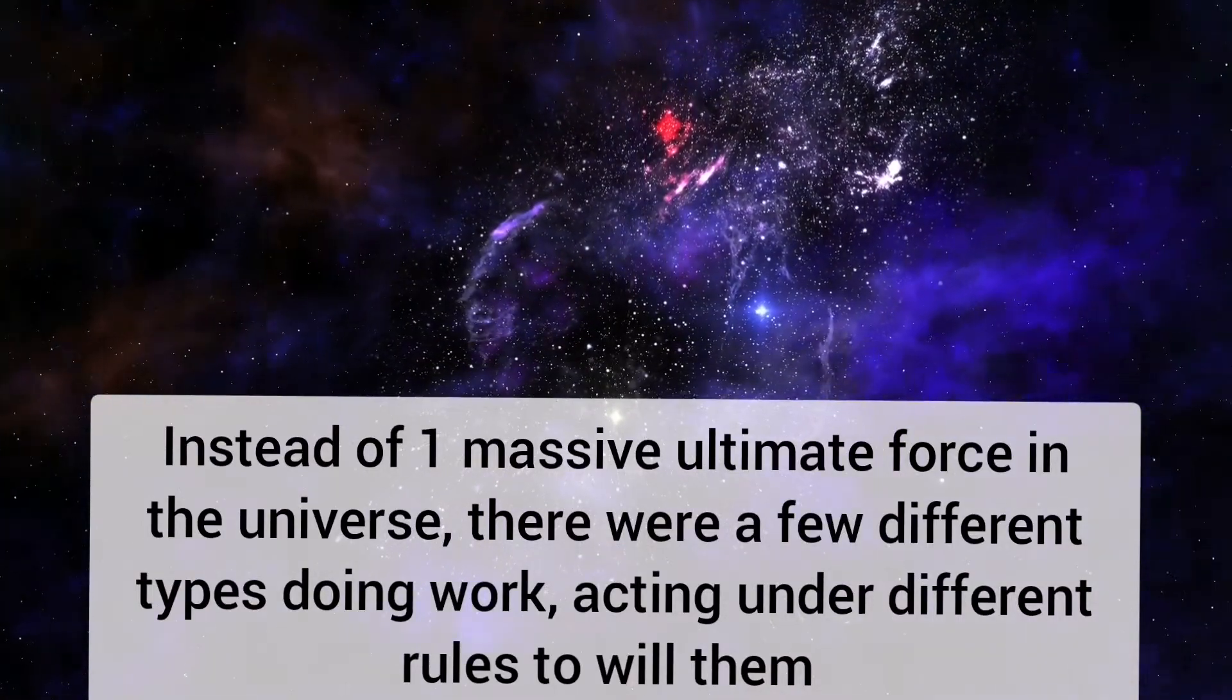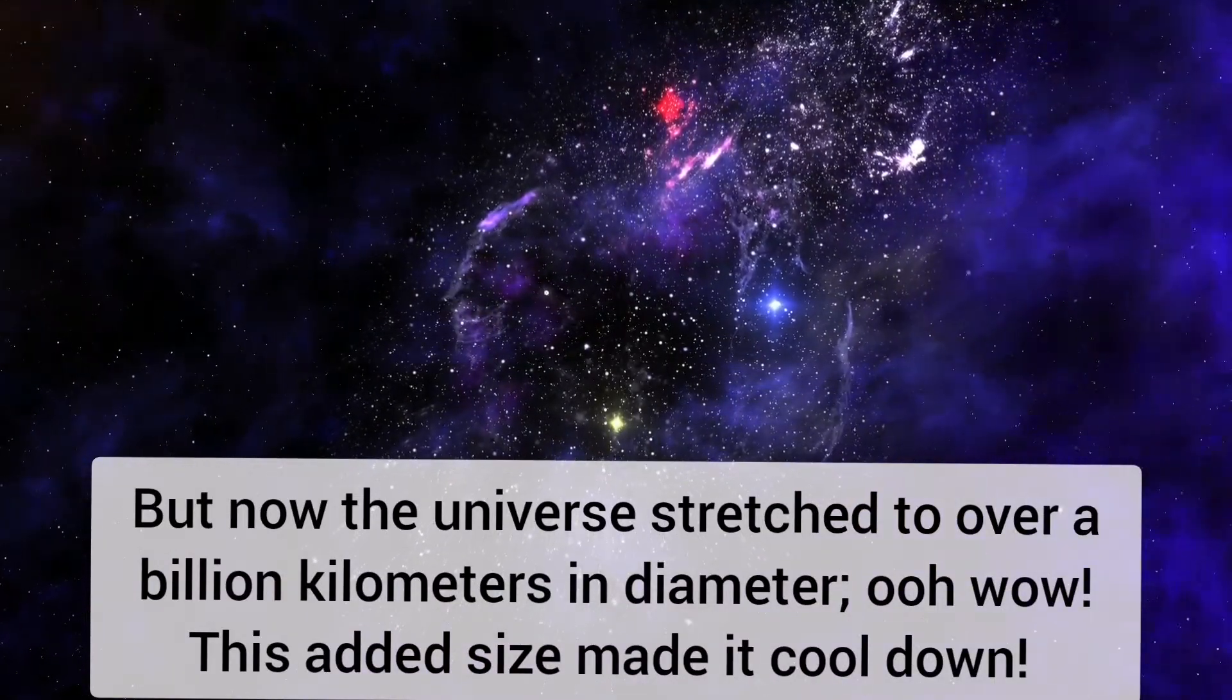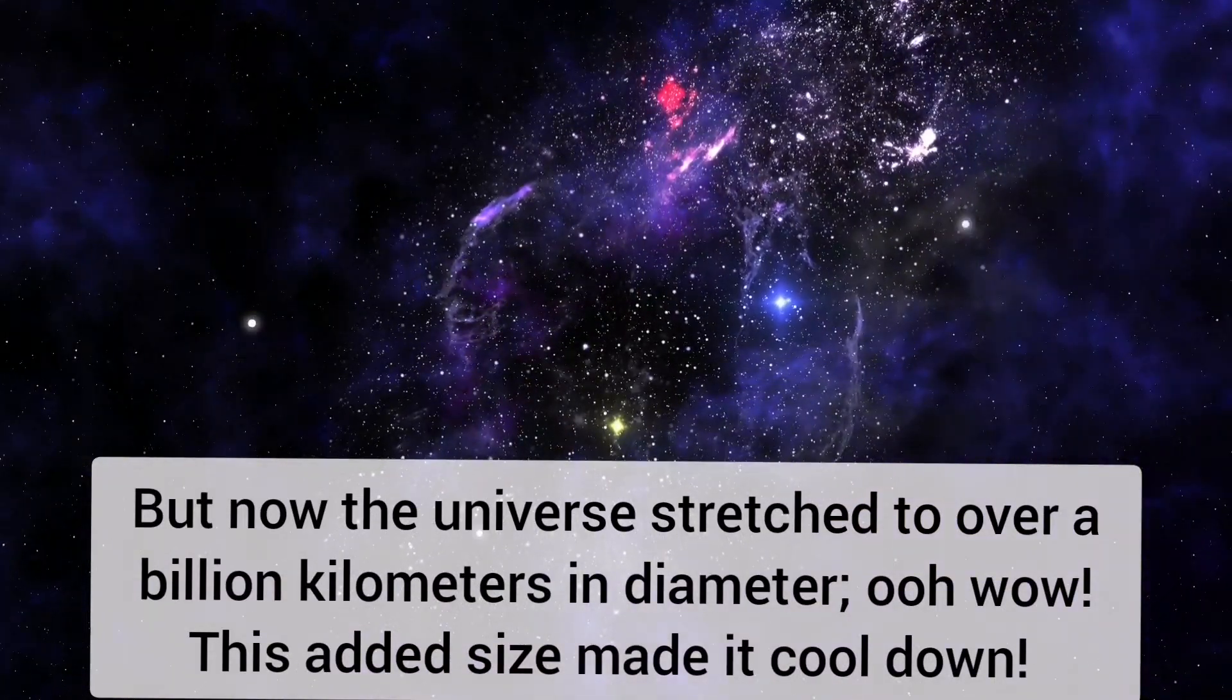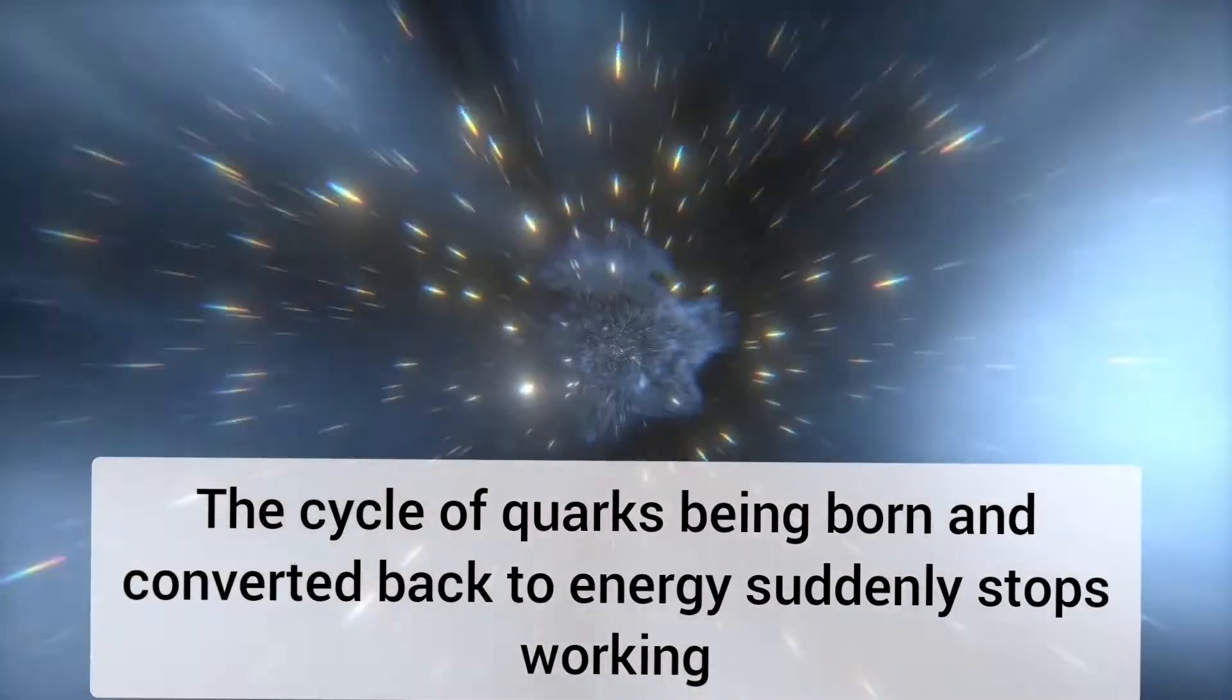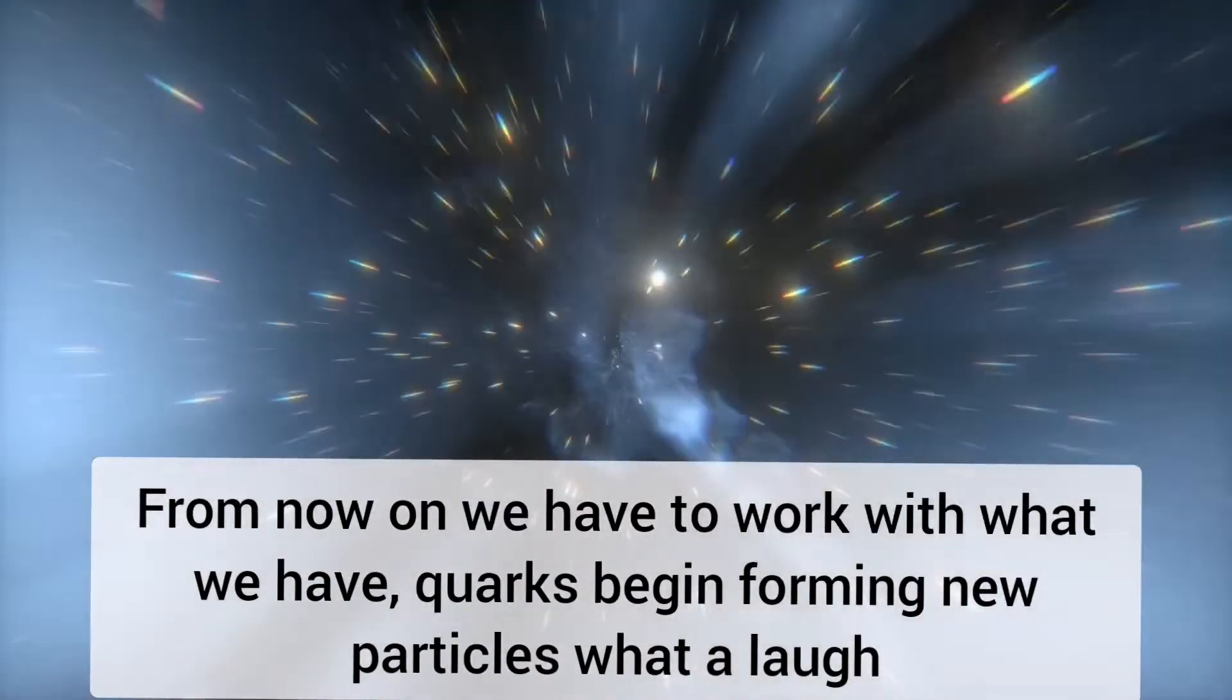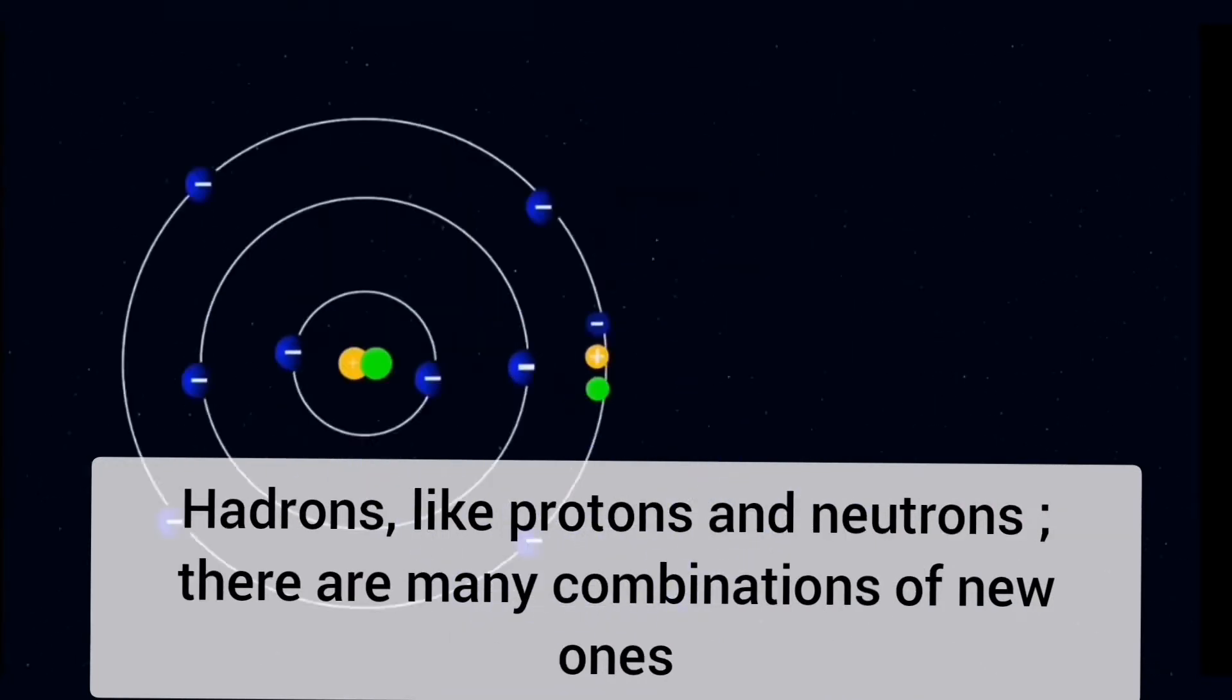Acting under different rules to will them. By now the universe stretched to over a billion kilometers in diameter. This added size made it cool down. The cycle of quarks being born and converted back to energy certainly stops working. From now on we have to work with what we have. Quarks begin forming new particles, hadrons like protons and neutrons.